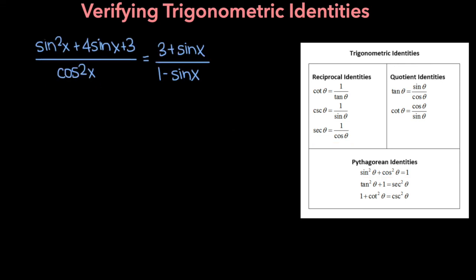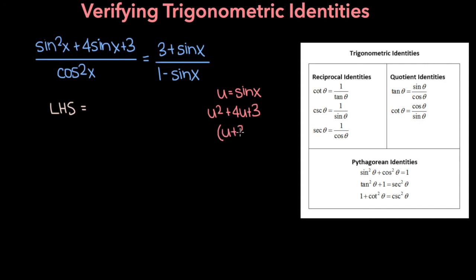Here's the fourth problem. We have to show that sine squared x plus 4 sine x plus 3 all over cosine squared x is equal to 3 plus sine x over 1 minus sine x. The left side looks more complicated, so let's start with that. The trick here is to realize that the numerator is actually a quadratic that we can factor. If we let u equal sine x, then the numerator is u squared plus 4u plus 3, which factors to u plus 3 times u plus 1. So the numerator factors to sine x plus 3 times sine x plus 1.